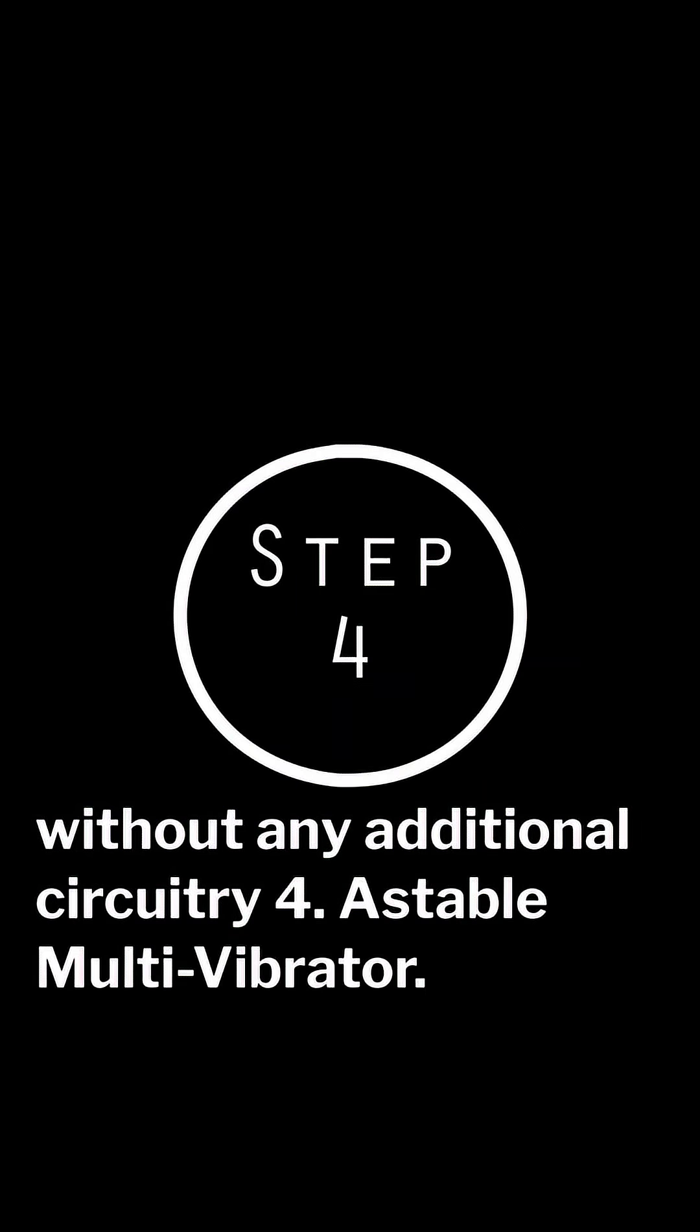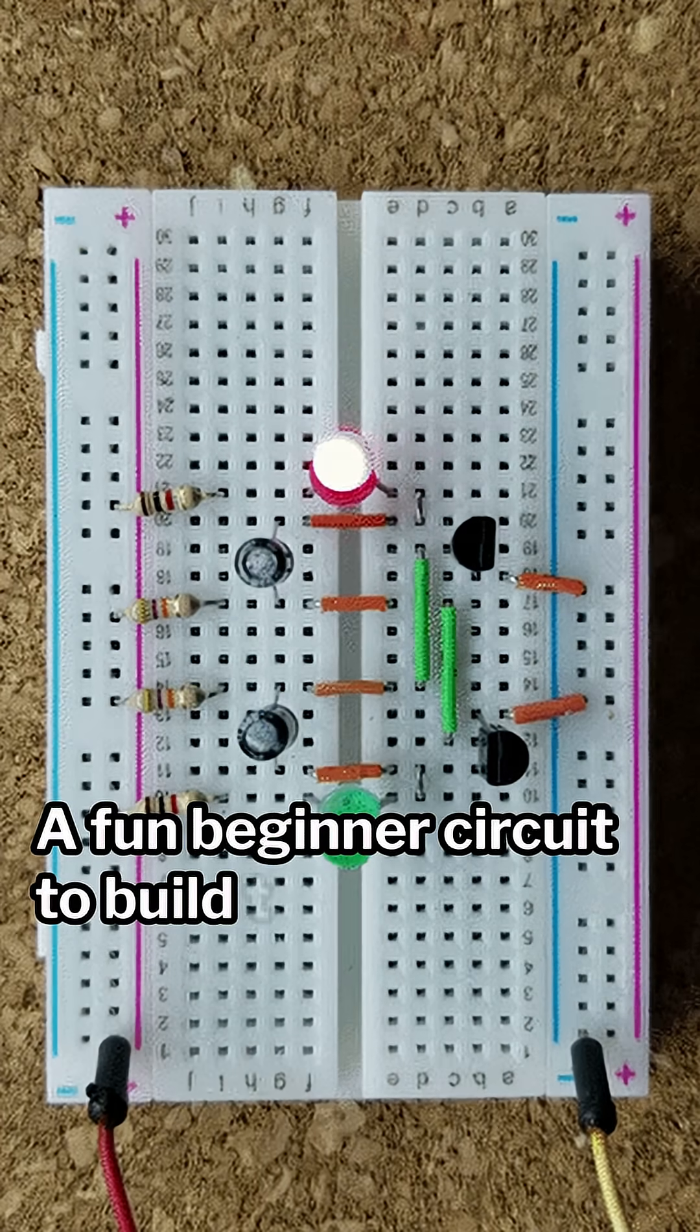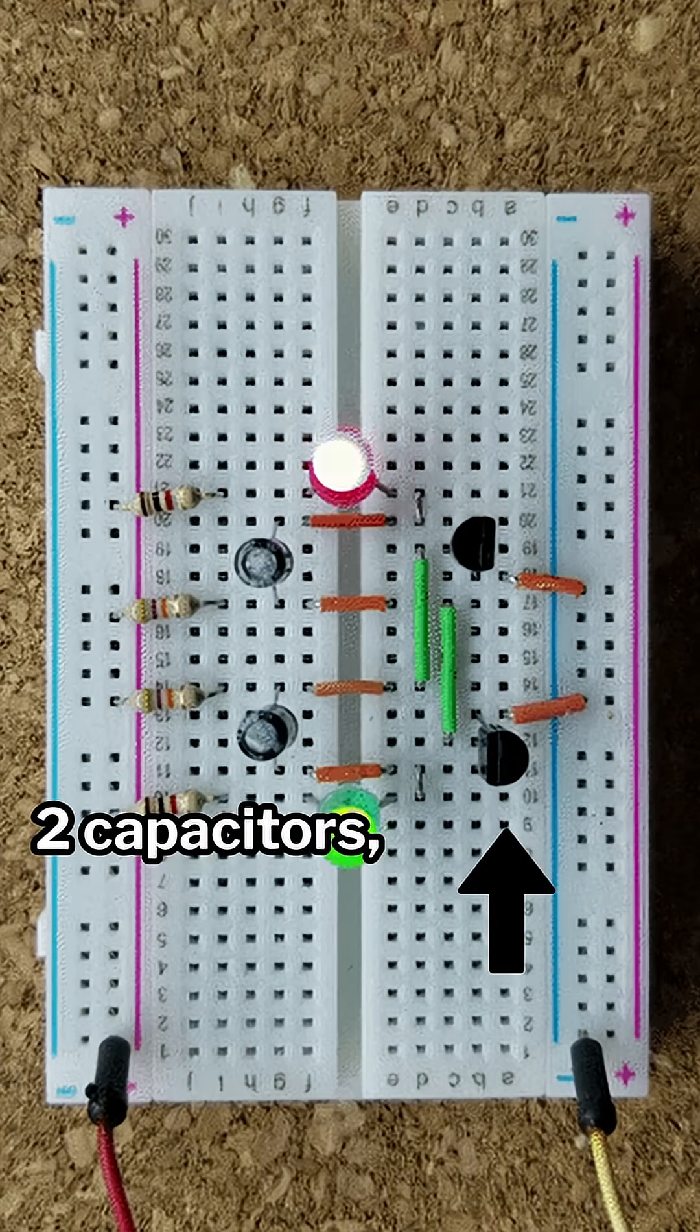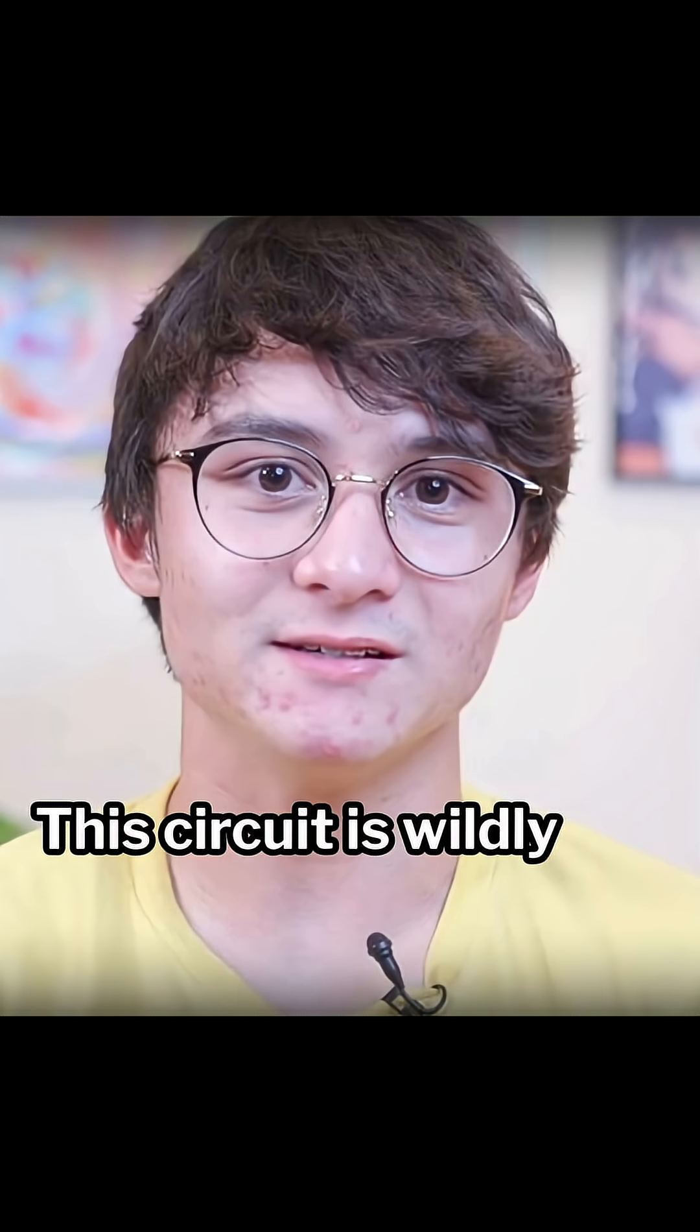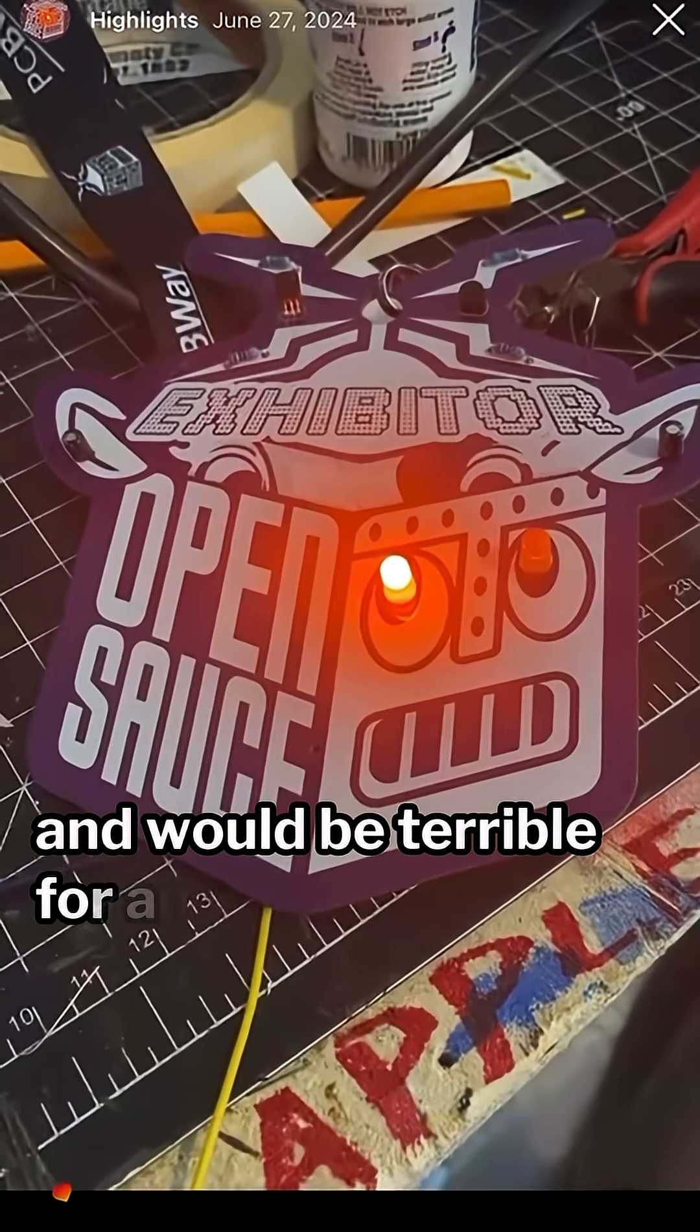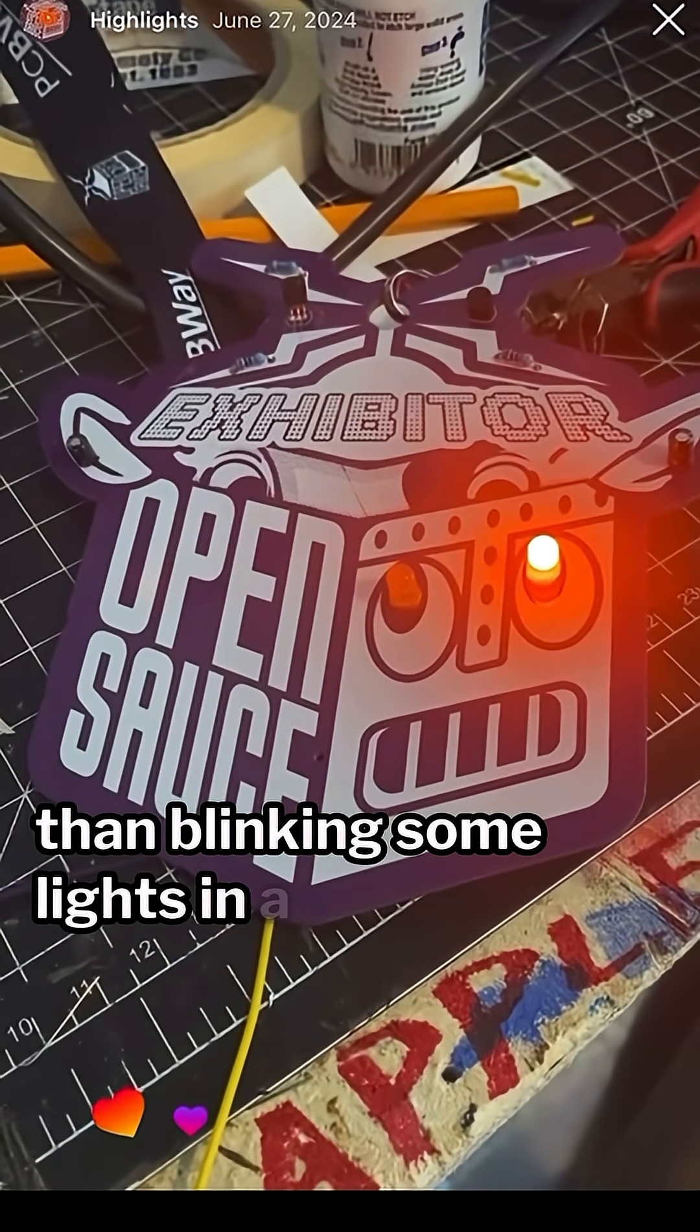4. Astable multivibrator. A fun beginner circuit to build that only requires two capacitors, two transistors, and a couple resistors. This circuit is wildly inconsistent and would be terrible for anything other than blinking some lights in a very simple circuit.